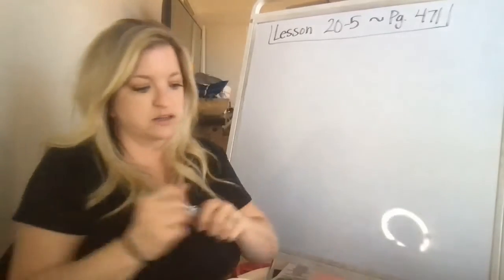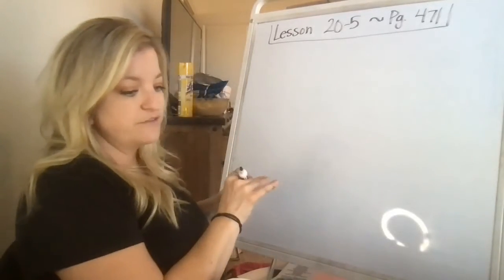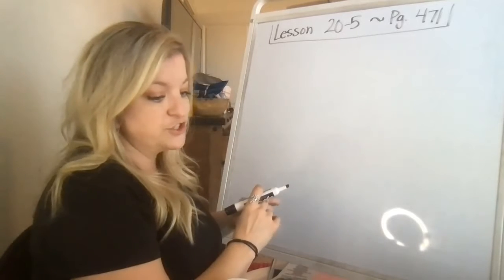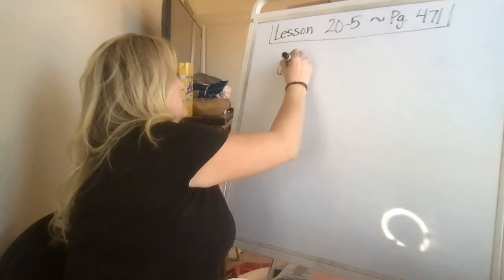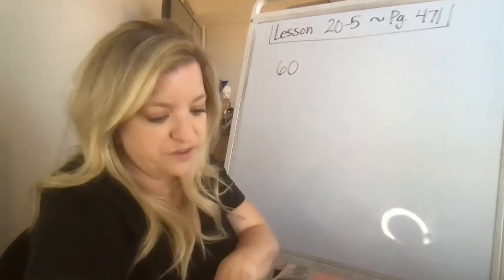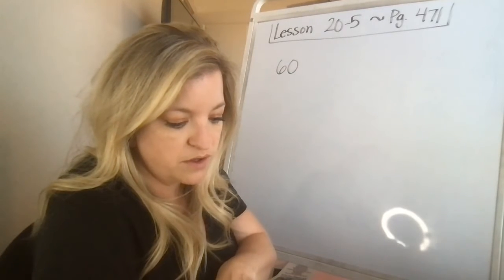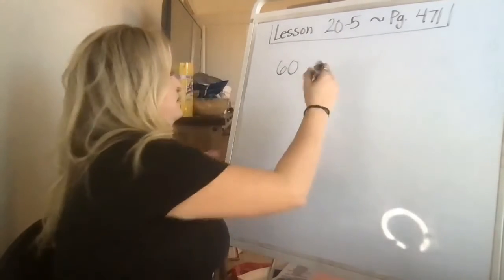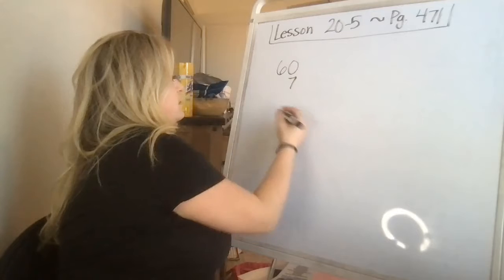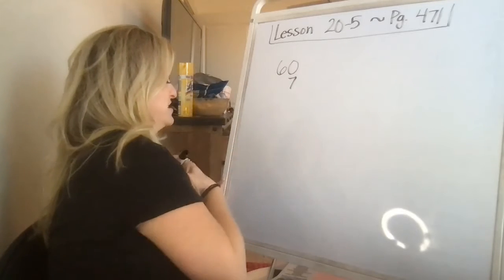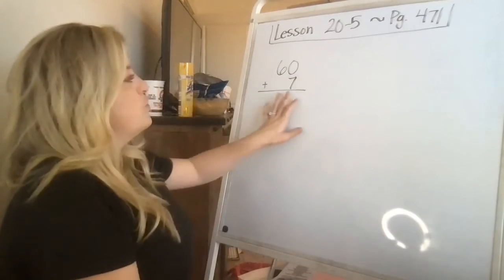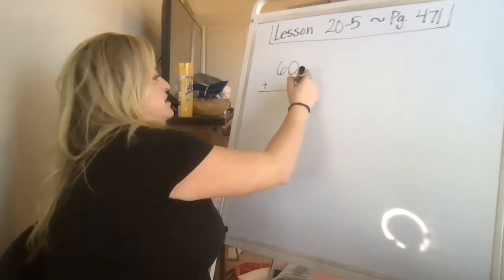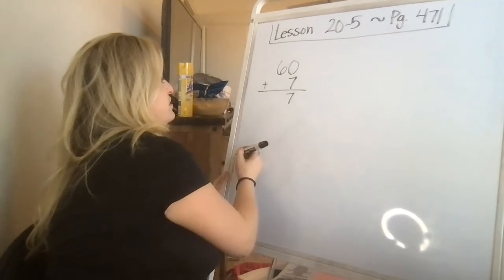So in his box, Gene, that's a soft G and a long E, Gene has 60 cookies in a box. And then if I count how many are on the tray, I have 1, 2, 3, 4, 5, 6, 7, 7 on the tray. This is why zero is such a friendly number. It's so easy to add 60 plus 7.